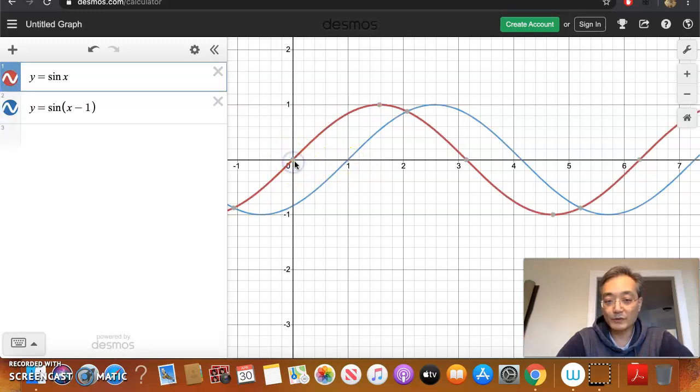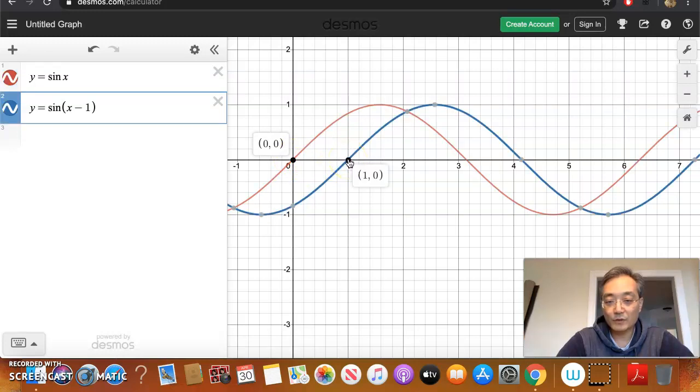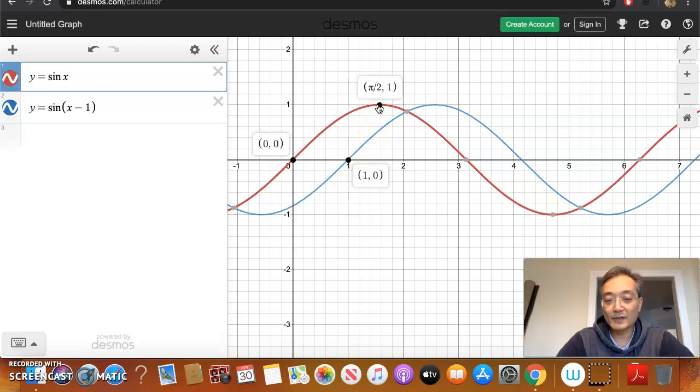So now (0,0), which was at the origin on sine, is now shifted over to (1,0) on sine of (x - 1). Likewise, if you look up here at the max, the max for sine of x was at π/2 comma 1. But now it's been shifted over. So now the max is at 2.571.